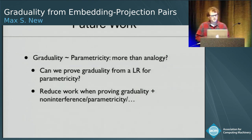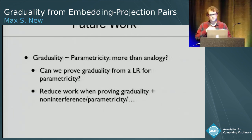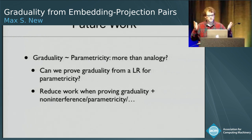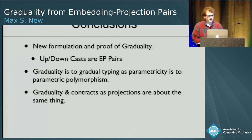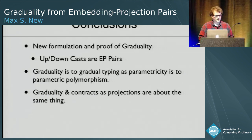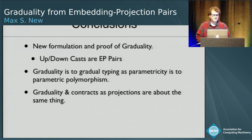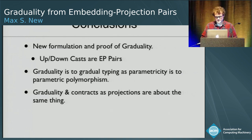As future work, we'd really like to push the analogy between graduality and parametricity further — maybe even prove the graduality theorem as a corollary of some parametricity theorem. And if we're going to make a logical relation for some other advanced feature like parametricity or non-interference for a security type language, maybe we can share work between the two. To conclude: we've presented a new formulation and proof of the graduality property; the most important component is that up and down casts form embedding projection pairs; graduality is to gradual typing as parametricity is to parametric polymorphism; and the graduality theorem and the contracts-as-projections work are really about the same thing.